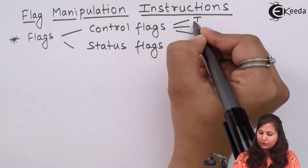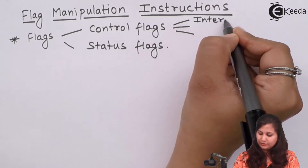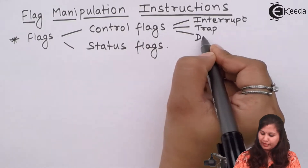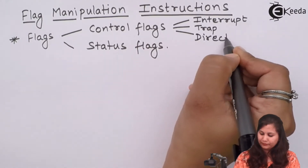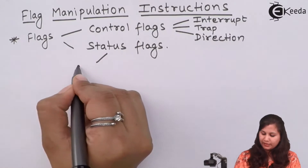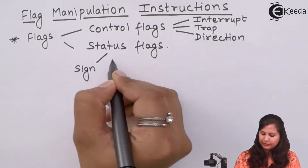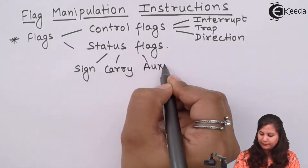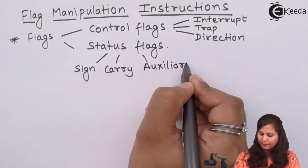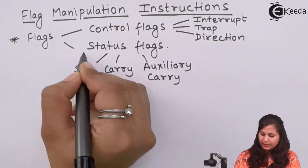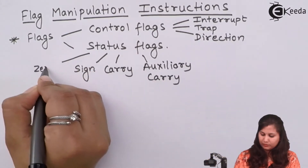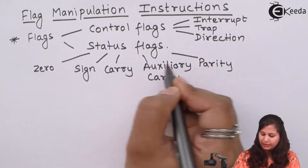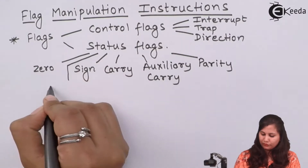The control flags are: interrupt flag, trap flag, and direction flag. The status flags are: sign flag, carry flag, auxiliary carry flag, zero flag, parity flag, and overflow flag.